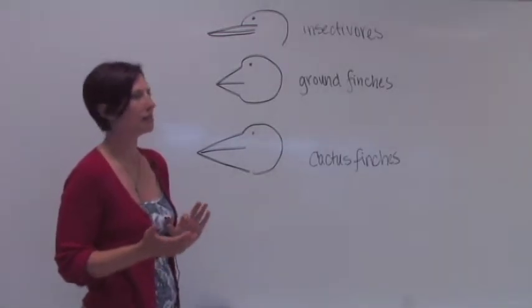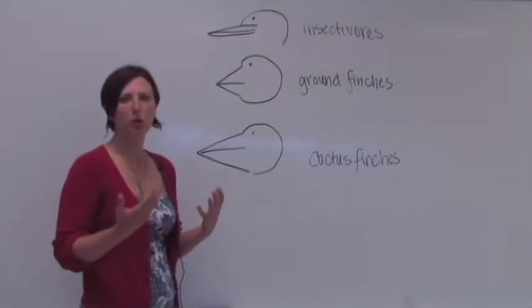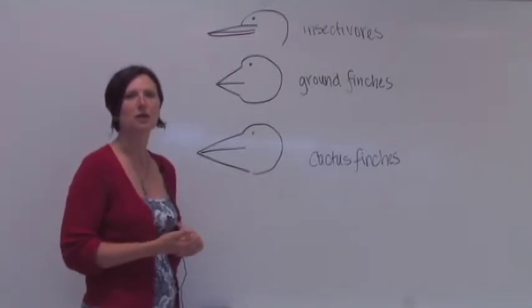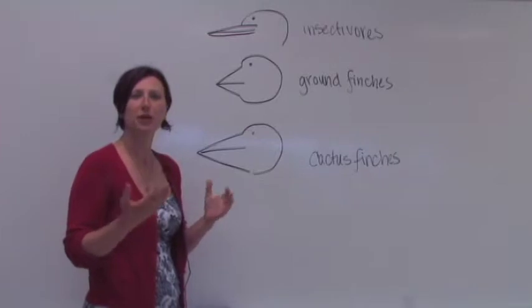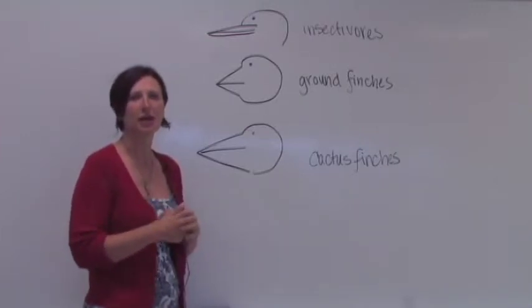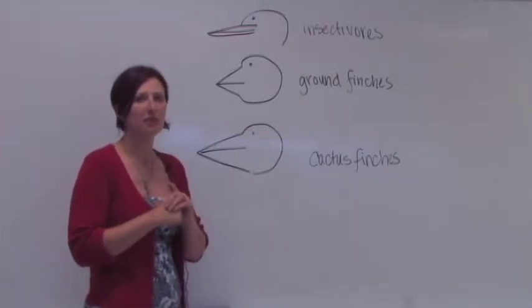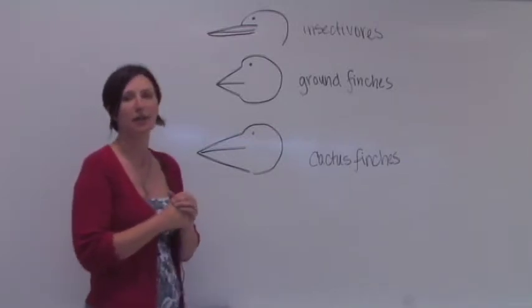Darwin got to the Galapagos and noticed that there were a group of finches, a group of birds, that all seemed to be pretty closely related. They seemed very similar, except they had some phenological differences like their beaks.